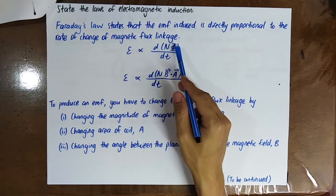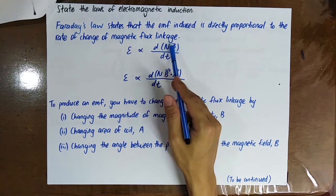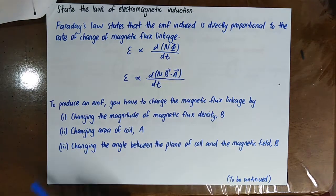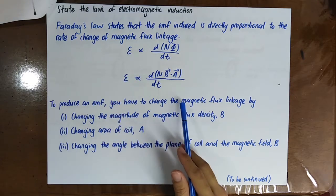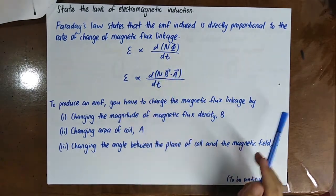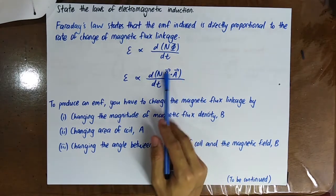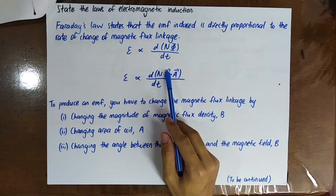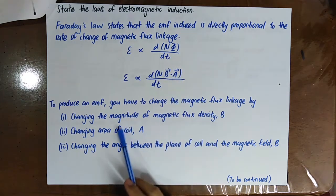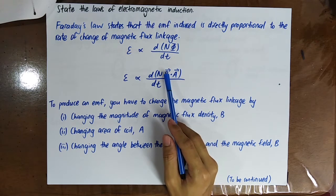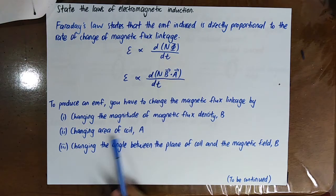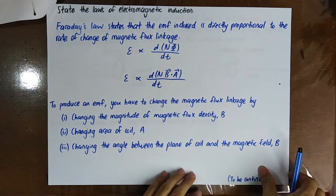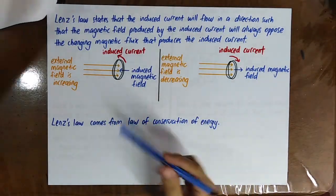The magnetic flux linkage is NΦ, which equals N times B dot A. From this equation, in order to produce an EMF you have to change the magnetic flux linkage — either by changing B (magnetic flux density), changing A (area of the coil), or changing the angle theta between B and A, since B dot A equals BA cos theta.